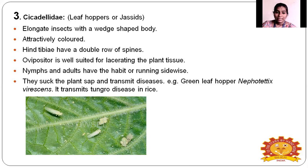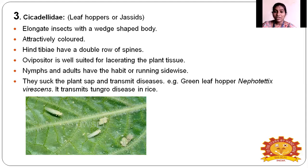Cicadellidae — the leafhopper or jassid. It is an elongated insect with a boat-shaped body, very small in size, and attractive light green in color. The hind tibia has a double row of spines, and the ovipositor is well-suited for lacerating plant tissues. Nymphs and adults have the habit of running sideways. Both suck sap from plants and also transmit disease. Example: green leafhopper, Nephotettix virescens, transmitting tungro disease in rice.